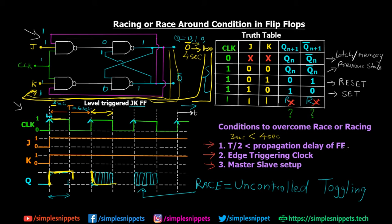That is point number one: T/2 is less than propagation delay of the flip-flop. The second method is using an edge triggering clock — the JK flip-flop is activated only on the positive or negative edge, and that edge takes very short time, allowing toggling only once, so race does not happen. The third very important setup is the master-slave setup, which we will see in the next video — a set of master flip-flops controls the slave flip-flops to avoid race around condition.